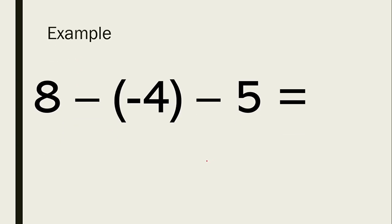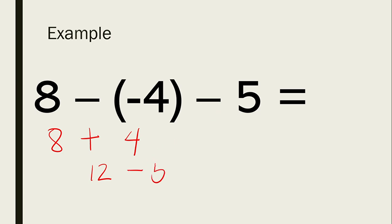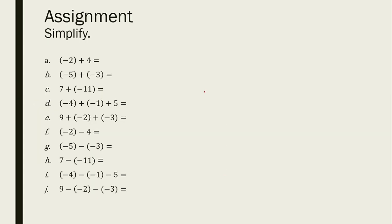The last example: 8 minus negative 4 minus 5. We have two ways — left to right, or subtract same signs first. Let's go left to right. 8 minus negative 4: copy 8, change to addition, change negative 4 to positive 4 — so 8 plus 4 is 12. Bring down minus 5: 12 minus 5 equals 7. So the answer is 7. For your assignment, please simplify these 10 items. Thank you.